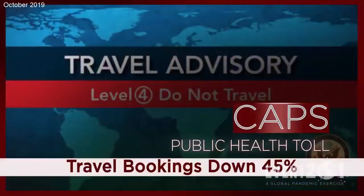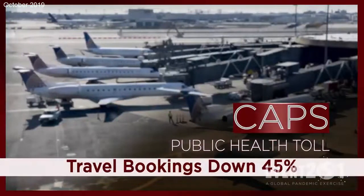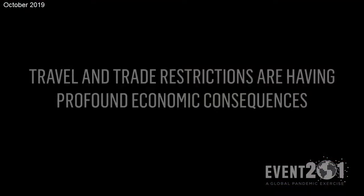Public health agencies have issued travel advisories, while some countries have banned travel from the worst affected areas. As a result, the travel sector is taking a huge hit — travel bookings are down 45% and many flights have been cancelled. A ripple effect is racing through the service sector, and governments that rely on travel and tourism as a large part of their economies are being hit particularly hard. How should national leaders, businesses, and international organizations balance the risk of worsening disease from continued movement of people against the risks of profound economic consequences of travel and trade bans?